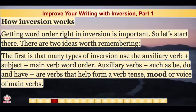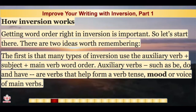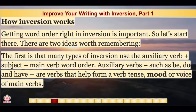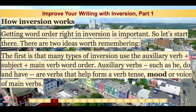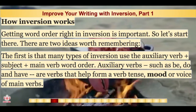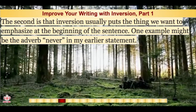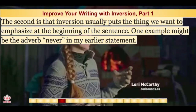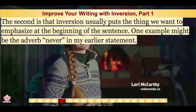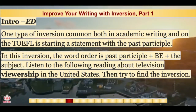Getting word order right in inversion is important, so let's start there. There are two ideas worth remembering. The first is that many types of inversion use the auxiliary verb plus subject plus main verb word order. Auxiliary verbs such as be, do, and have are verbs that help form a verb tense, mood, or voice of main verbs. The second is that inversion usually puts the thing we want to emphasize at the beginning of the sentence — one example might be the adverb "never" in my earlier statement.